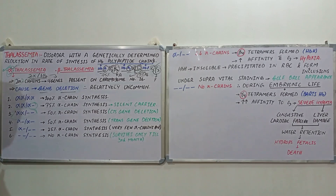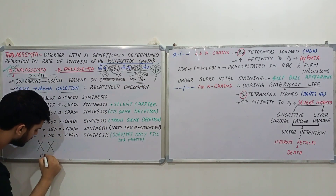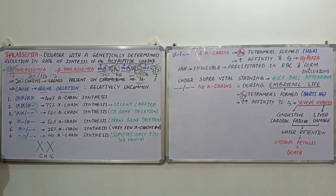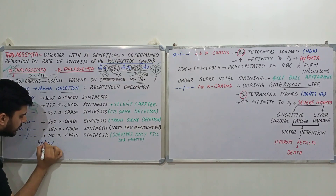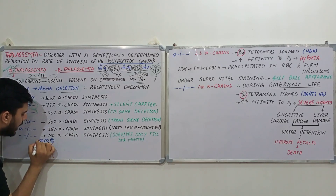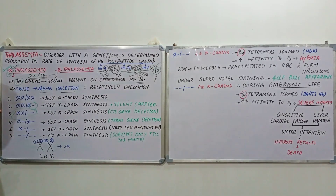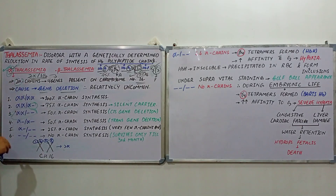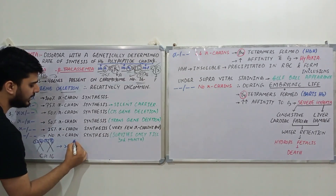These four genes are present on the homologous pair of chromosome number 16 — gene 1, gene 2, gene 3, and gene 4 — all responsible for the formation of two alpha chains. If there is gene deletion, we see a reduction in the rate of alpha chain synthesis. The severity of alpha thalassemia depends upon the number of gene deletions: more gene deletions lead to more severe thalassemia.